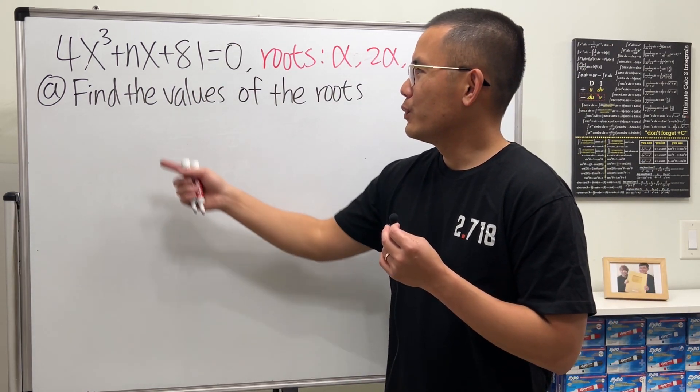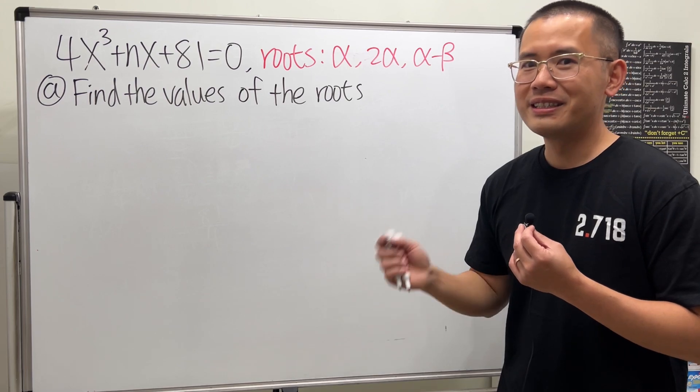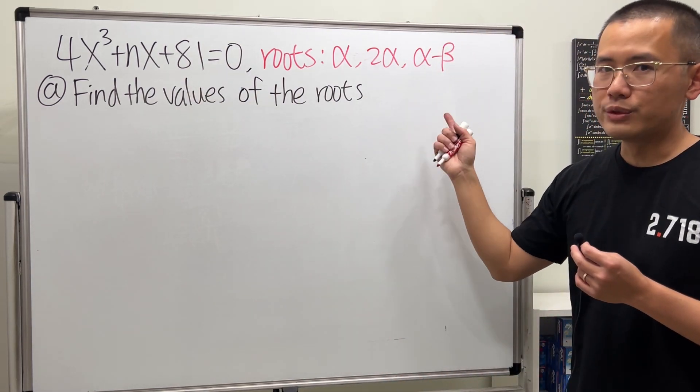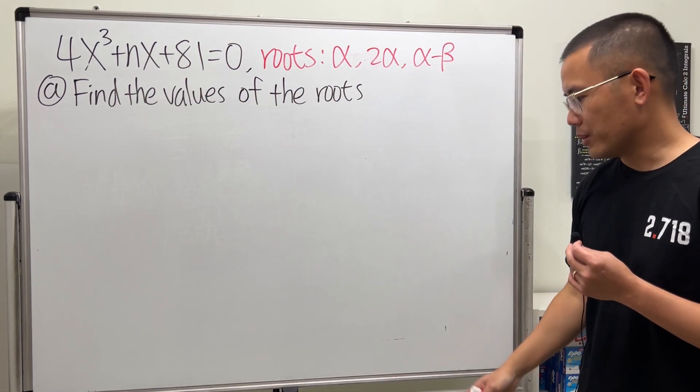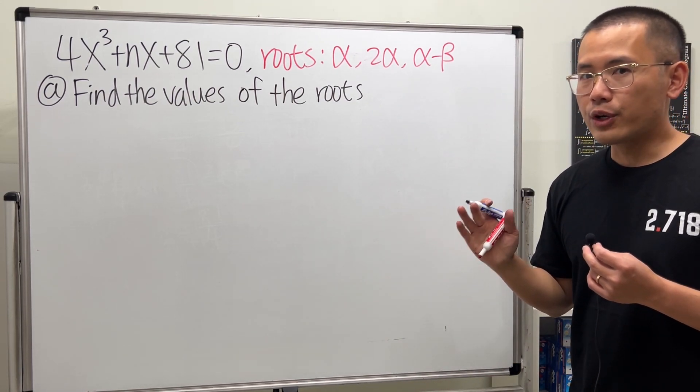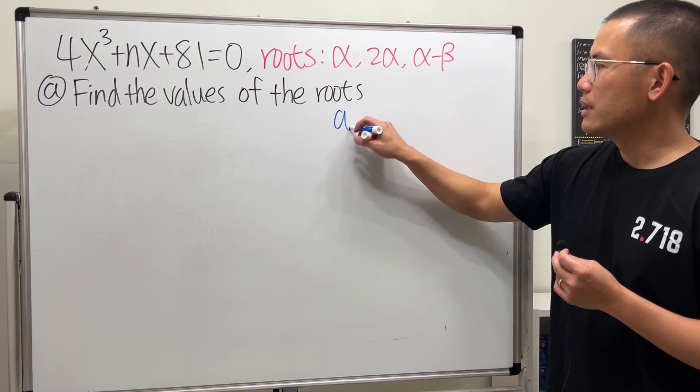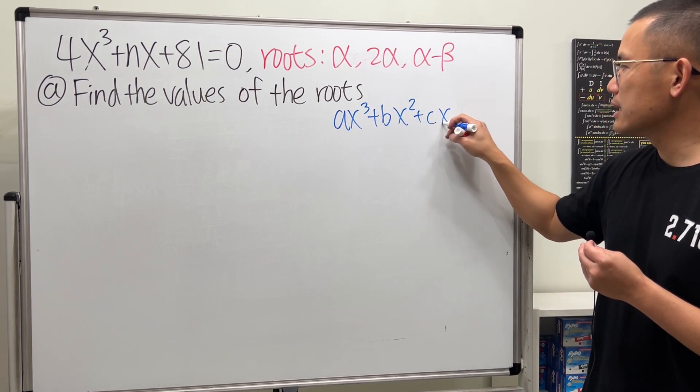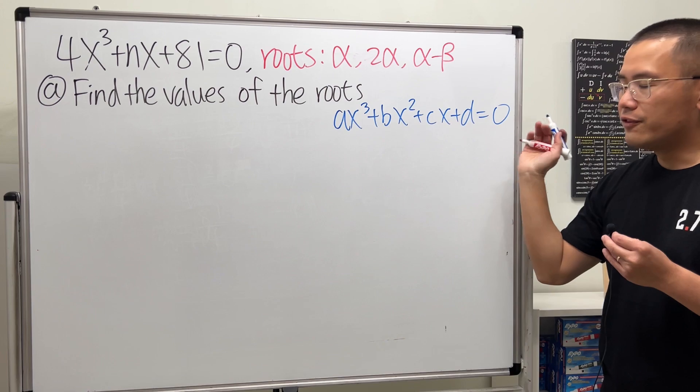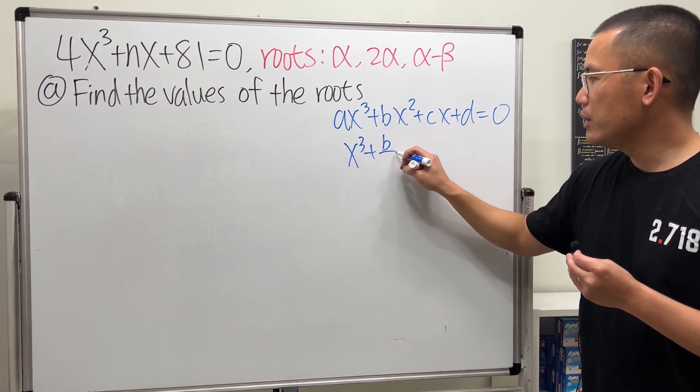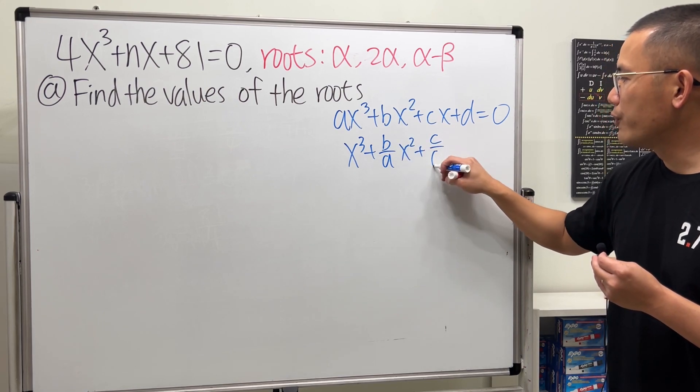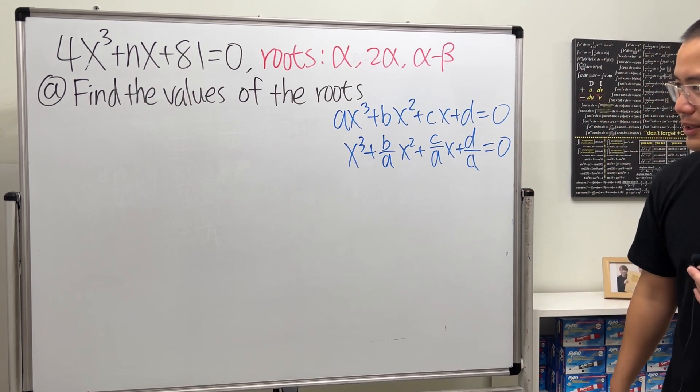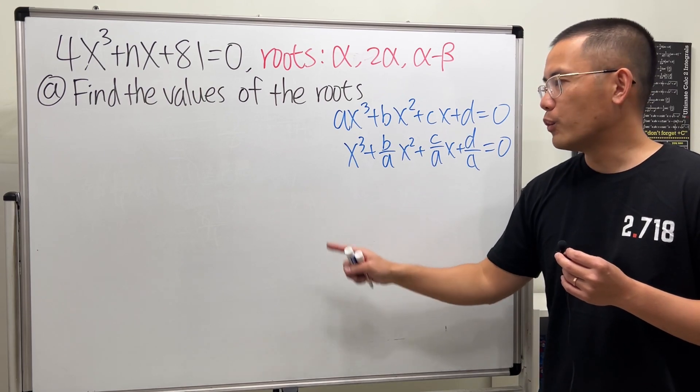And because you might be wondering, we don't even know what n is. Is this enough information? Yes. Here's the deal. We must know the connection between the coefficients of the equation and the roots. And this is also known as Vieta's theorem. So I'm going to write that down right here for you guys. If we have a cubic case, once we get to, let's say, the original equation in the standard form, ax^3 + bx^2 + cx + d = 0. If we divide everybody by a, then we get x^3 + (b/a)x^2 + (c/a)x + (d/a) = 0.